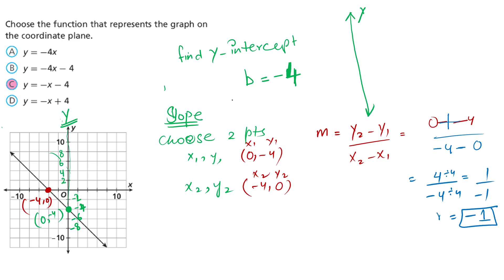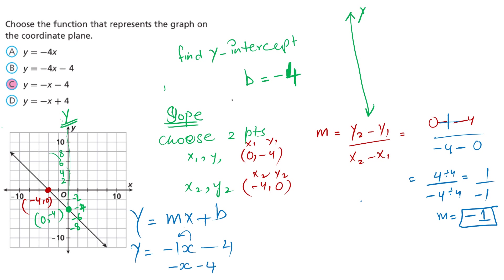Now we have the y-intercept and the slope. The equation of the line is y equals mx plus b. Replace m with negative 1, keep x as it is, and b is negative 4. Before x, if there is a 1, we don't write it — so it can be written as y equals negative x minus 4. Check the answer choices — C is the answer.